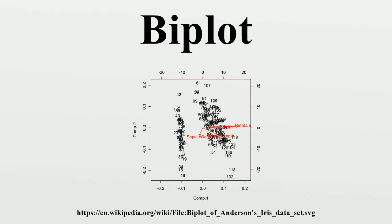Biplots are a type of exploratory graph used in statistics, a generalization of the simple two-variable scatter plot. A biplot allows information on both samples and variables of a data matrix to be displayed graphically.